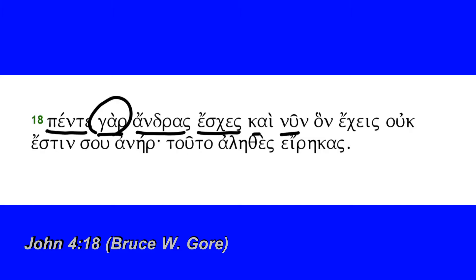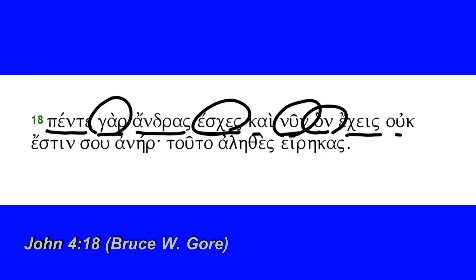'Kai nun' — this is the adverb meaning 'now,' indeclinable. 'And now hon' — this is the accusative masculine singular relative pronoun. 'And now ekes' — second person singular of 'echo,' the same word but now in the present tense — 'and now he who you have,' the relative pronoun, 'the one whom you have.'